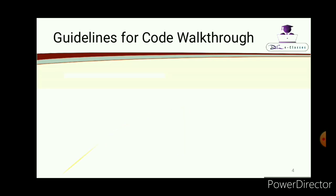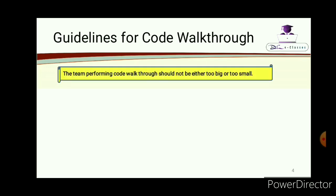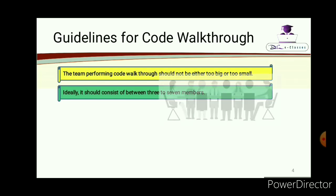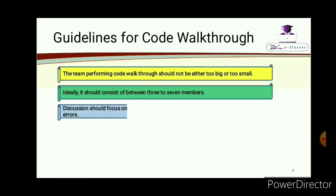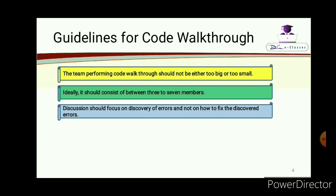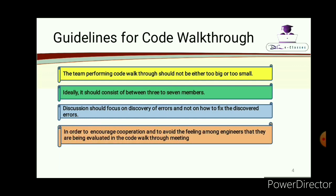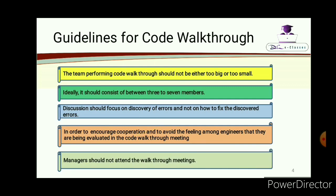Although code walkthrough is an informal technique, different guidelines have been proposed. The team performing code walkthroughs should not be either too big or too small — ideally it should consist of between three to seven members. Discussion should focus on discovery of errors and not on how to fix them. To encourage cooperation and avoid the feeling among engineers that they are being evaluated, the manager should not attend the code walkthrough meetings — that is why it is known as an informal technique.